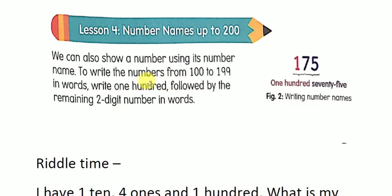To write number names for numbers from 100 to 199: the numbers coming in between 100 to 199 have 100 in common. So first write 100 followed by the remaining two digits. For example, 175 — 175 is coming in between 100 and 199. First write 100, then the number of tens followed by the number of ones: one hundred seventy-five.